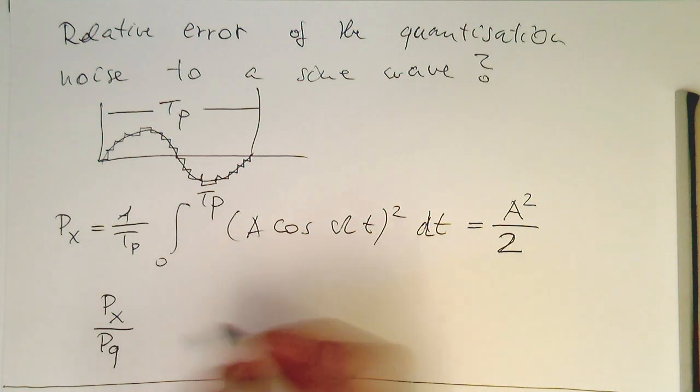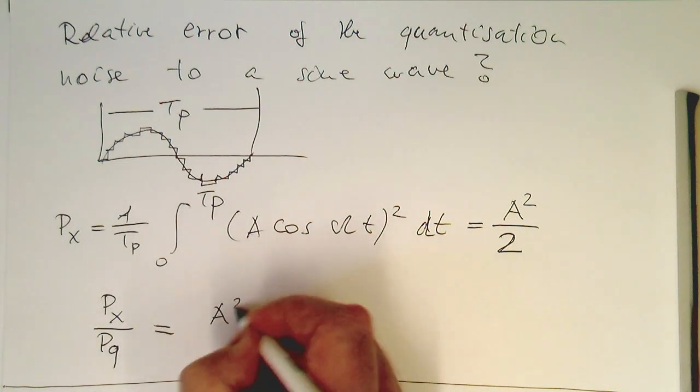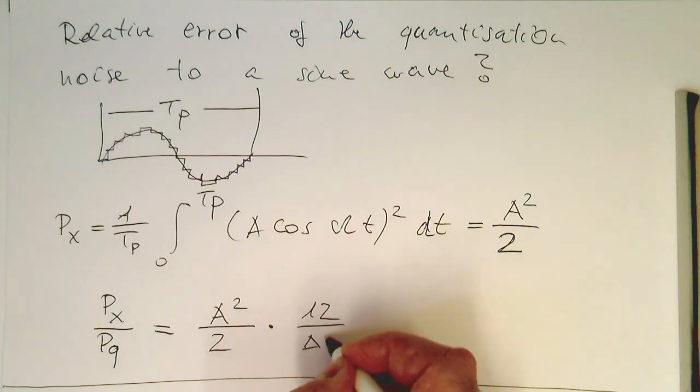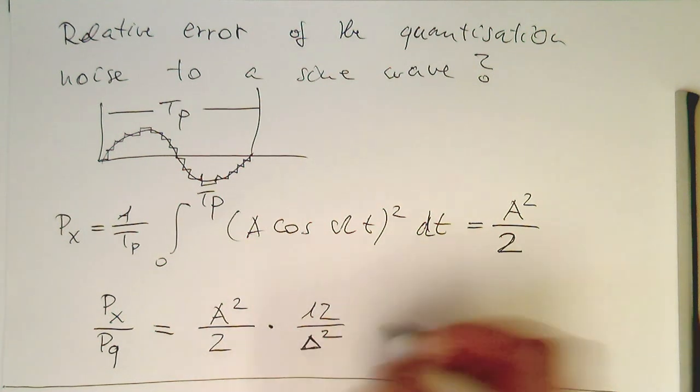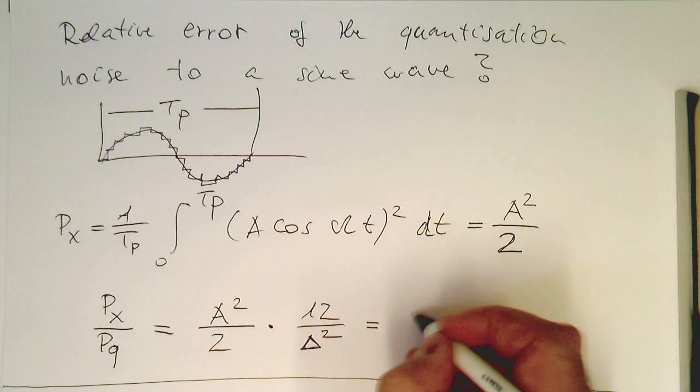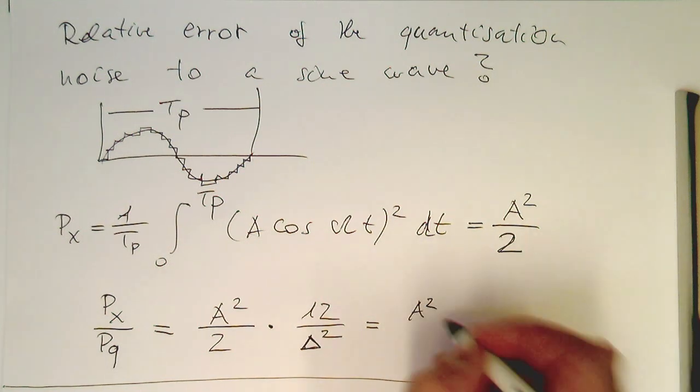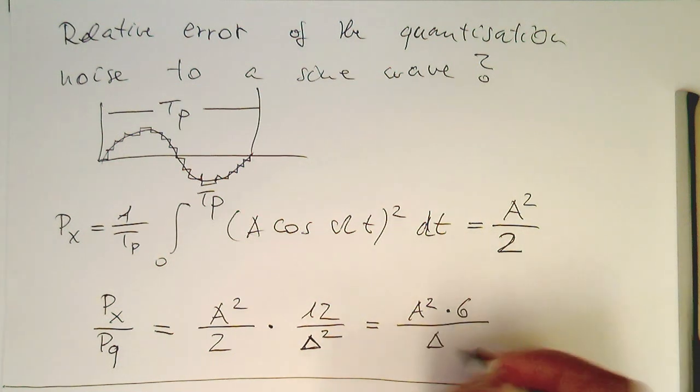A squared half multiplied by twelve divided by Delta squared. Obviously the two makes this a bit smaller, so then we've got A squared multiplied by six divided by Delta squared.